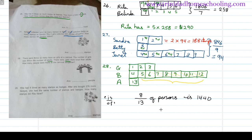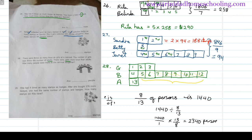Using the 'is divided by off' method: 1440 divided by 8 over 13. We change the division to multiplication and invert the second fraction, giving us 1440 multiplied by 13 divided by 8, which equals 2340. That is the total number of persons at the carnival.